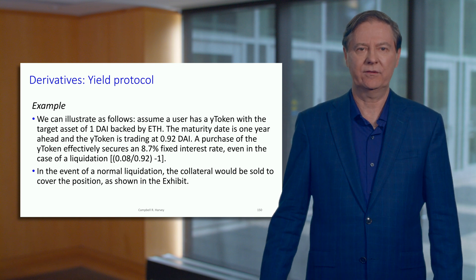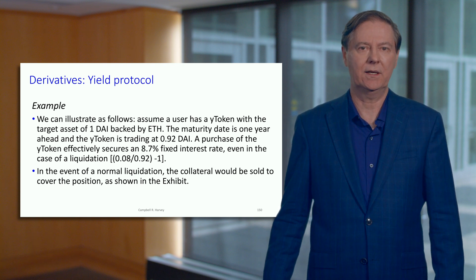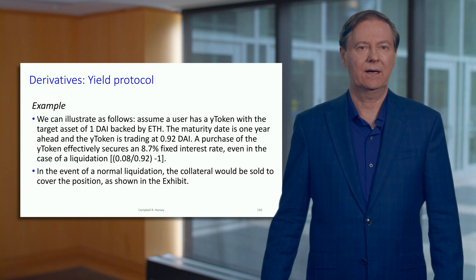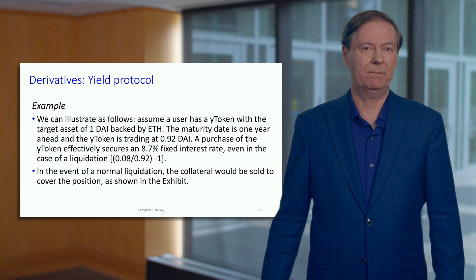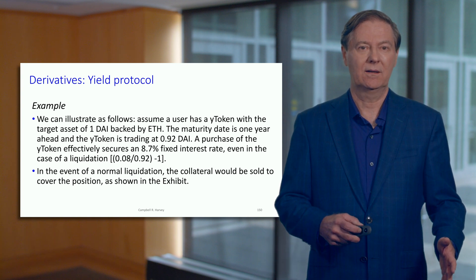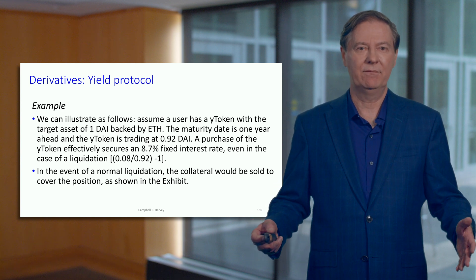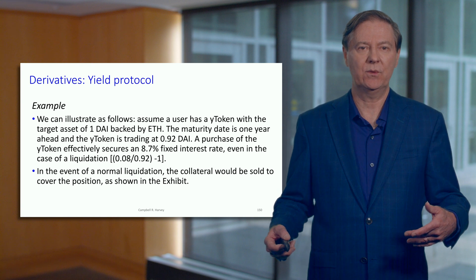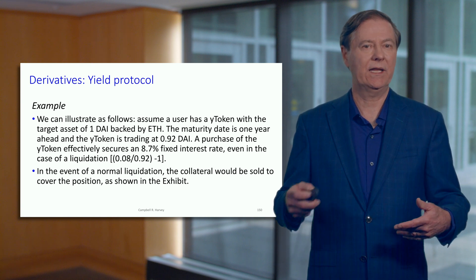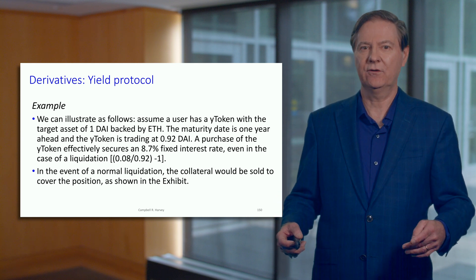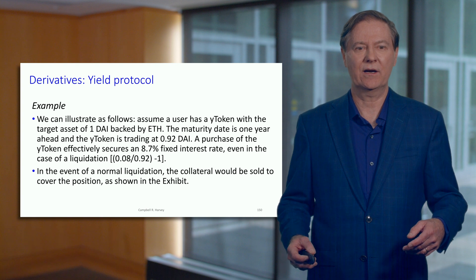If you buy this looking for the 8.7% return and something happens in terms of under-collateralization, you actually get paid your 8.7%, and that could happen before the full year period. So it might be you're just holding for a month. If there is an event where the collateralization ratio is pierced, then everything is unwound, and you get the 8.7%.